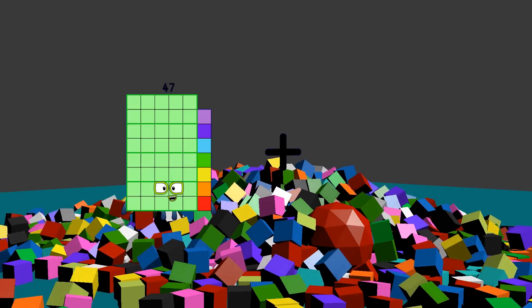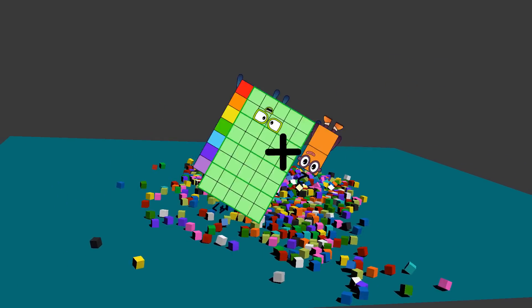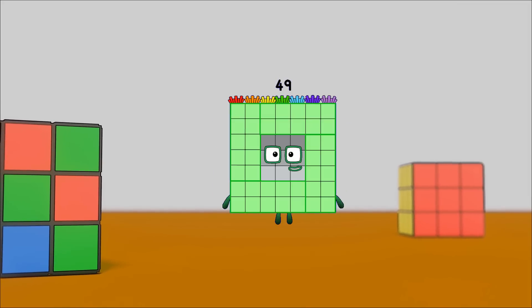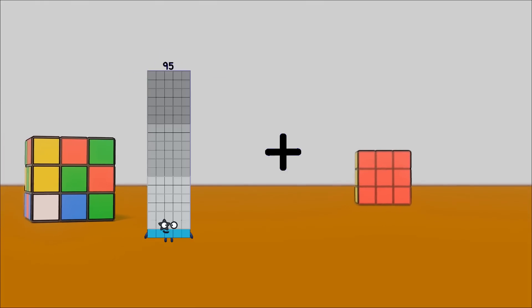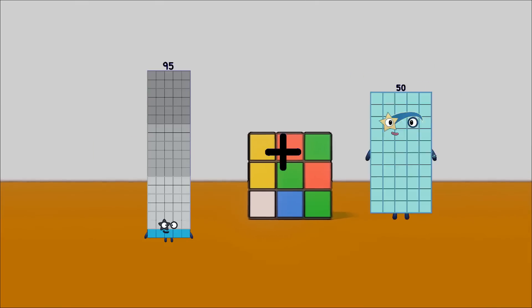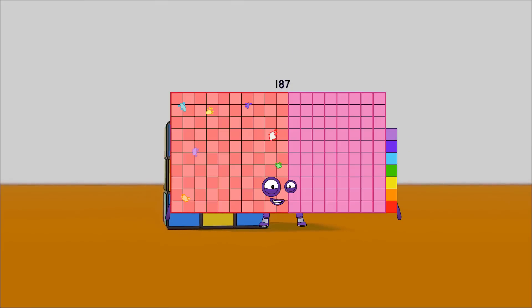47 plus 2 equals 49. 95 plus 92 equals 187.